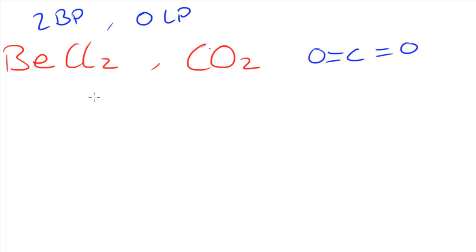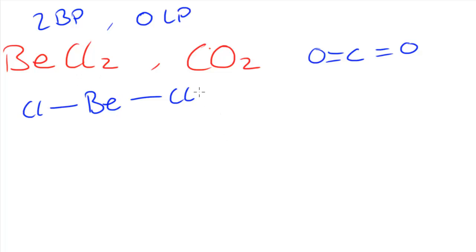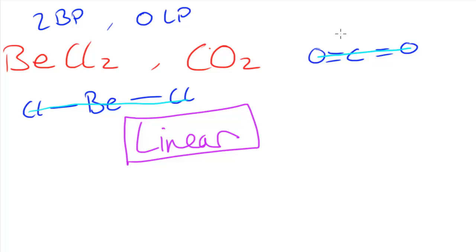So CO₂ is going to have the same shape as BeCl₂. If I draw this out, we have the Be in the middle and then a Cl on each side. This is all going in one plane. If I draw a line from one chlorine to the other, or from one O to the other, it's basically a straight line. So the name we give to these two molecules in terms of their shape is linear, and the bond angle is 180 degrees.